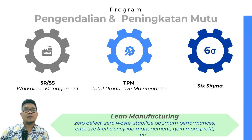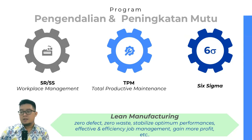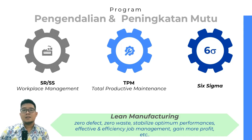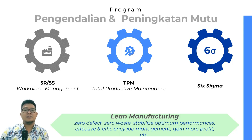Program-program yang umum dilakukan di industri untuk melakukan pengendalian dan peningkatan mutu adalah yang pertama 5R atau 5S sebagai manajemen area kerja, kemudian ada Total Productive Maintenance atau TPM, dan yang terakhir adalah Six Sigma. Tiga jenis program ini dilakukan dengan tujuan untuk mencapai Lean Manufacturing, di mana sangat sedikit dihasilkan pemborosan, Zero Defect, Zero Waste, performance optimum yang stabil, manajemen pekerjaan yang efektif dan efisien, hingga akhirnya didapatkan keuntungan yang lebih banyak.